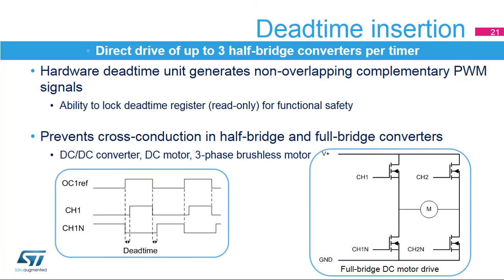A hardware dead-time generator provides two non-overlapping complementary PWMs from a reference PWM signal. The STM32 timers include up to three dead-time generators for OC1, OC2, and OC3 channels. The dead-time duration is programmed with an 8-bit value, which can be locked by a write-once lock bit to prevent corruption during run-time. Dead-time insertion is necessary when driving half-bridges, where a pair of transistors are connected in series between two power rails, requiring time before switching on one side to allow the other side to switch off. Half-bridges are commonly found in DC-to-DC converters and three-phase inverters with three PWM pairs.